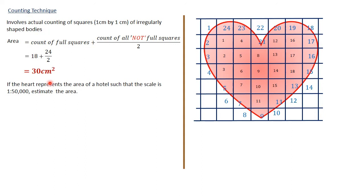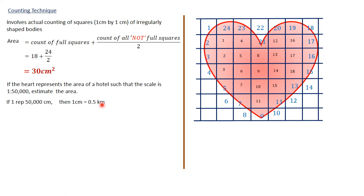Now, if the heart represents the area of a hotel and the scale is 1 to 50,000, how do you estimate the area? The first thing is we need to know that one centimeter in this case represents 50,000 centimeters. Since the squares were one centimeter by one centimeter, it means one square represents 50,000 centimeters squared. One centimeter equals 0.5 of a kilometer since 100,000 centimeters make a kilometer.